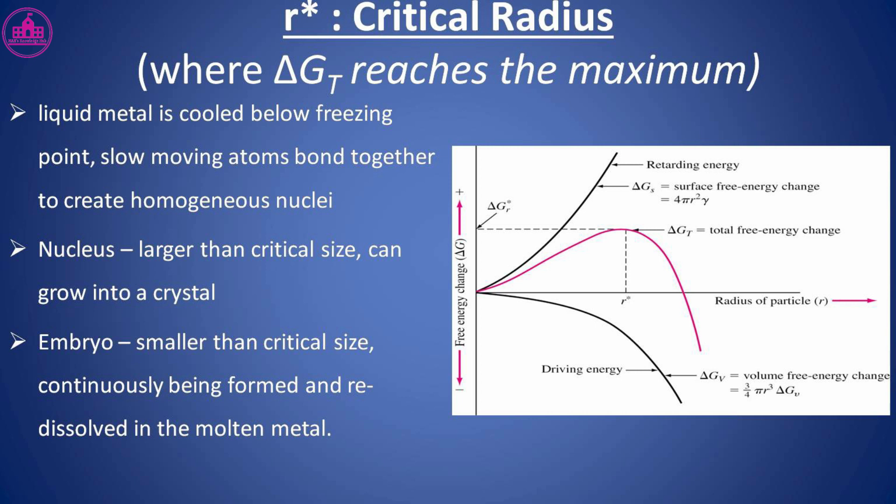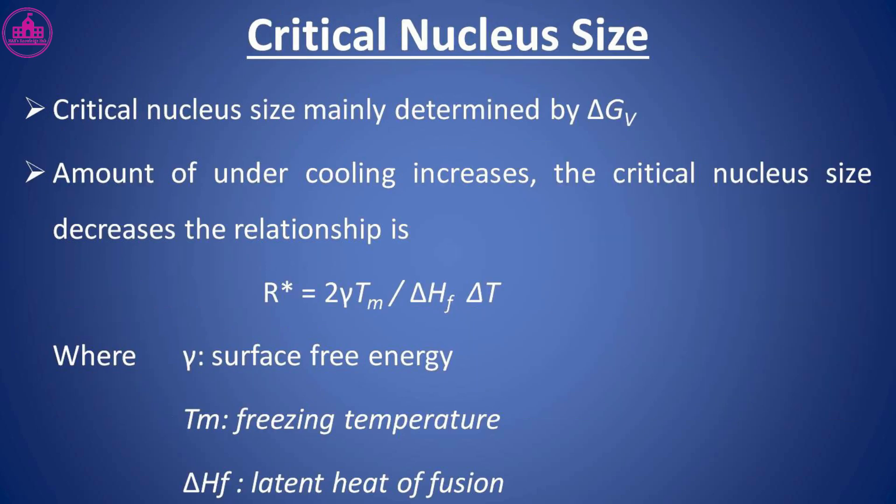Critical radius: Liquid metal is cooled below the freezing point. Slow-moving atoms bond together to create homogeneous nuclei. A nucleus larger than the critical size can grow into a crystal. An embryo is smaller than the critical size and is continuously being formed and re-dissolved in the molten metal.